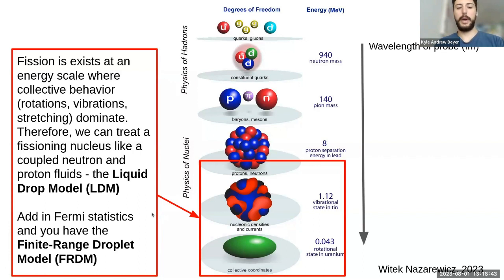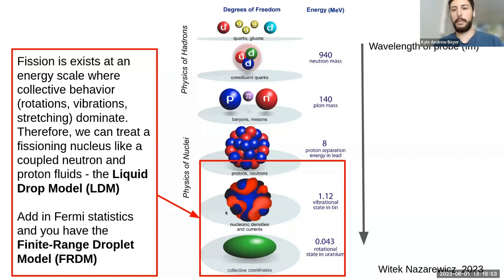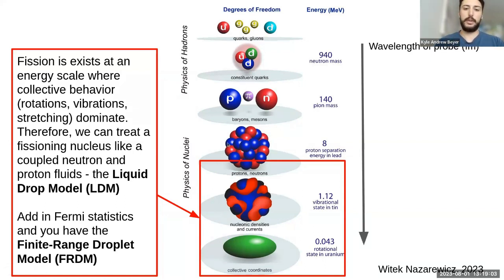Getting back to the idea that we can treat our nucleons as a sort of collective nuclear matter — this idea is called the liquid drop model, which you've likely heard in previous talks in this summer school. And if you add corrections that arise from smaller length scales, you get what's called the finite range droplet model, which has some interesting predictions about fission.